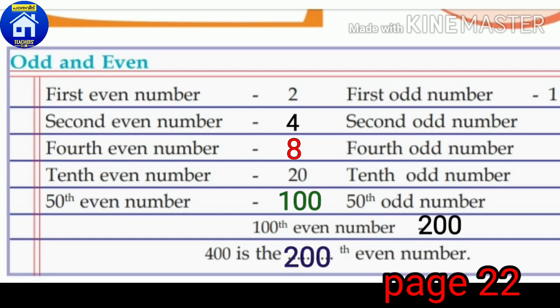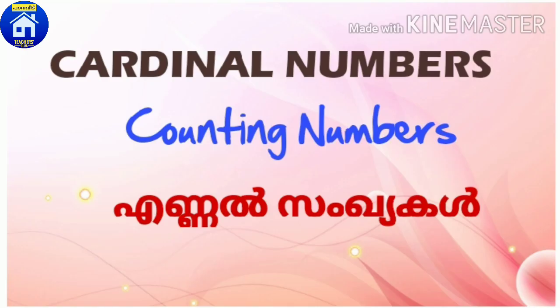400 is the 200th even number. The first odd number is 1, the second odd number is 3, the fourth odd number is 7, the 10th odd number is 19, and the 50th odd number is 99. Next, cardinal numbers — that is, counting numbers: 1, 2, 3, 4, 5...